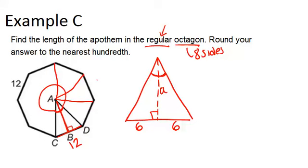So what you want to do is 360 divided by 8, and you get 45 degrees. So this angle up here is 45 degrees, which means each half is 22.5 degrees, because that's 45 divided by 2.